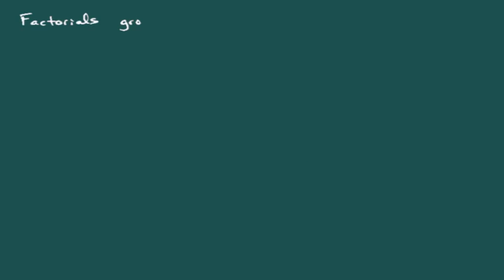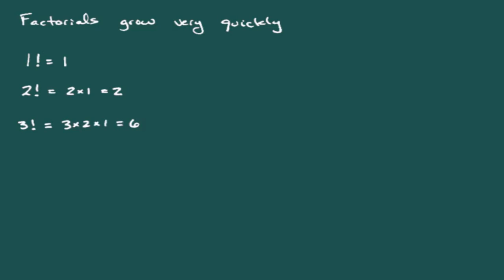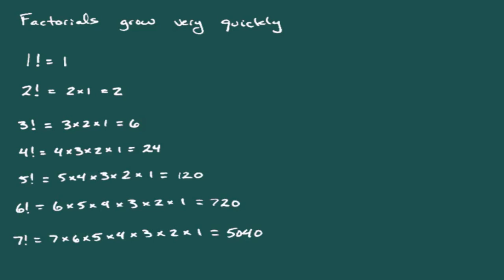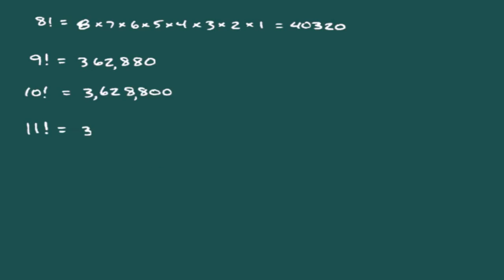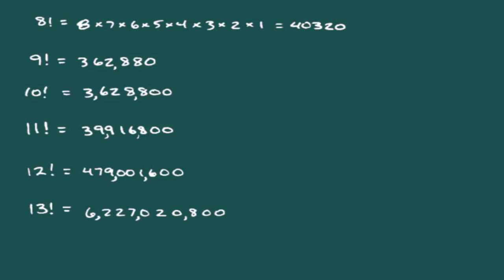Factorials get very large very fast. Starting out: one factorial is 1, two factorial is 2, three factorial is 6, and so on. By seven factorial we're at 5040. Continuing to 13 factorial, we get 6,227,020,800 — a pretty big number just for 13 factorial.